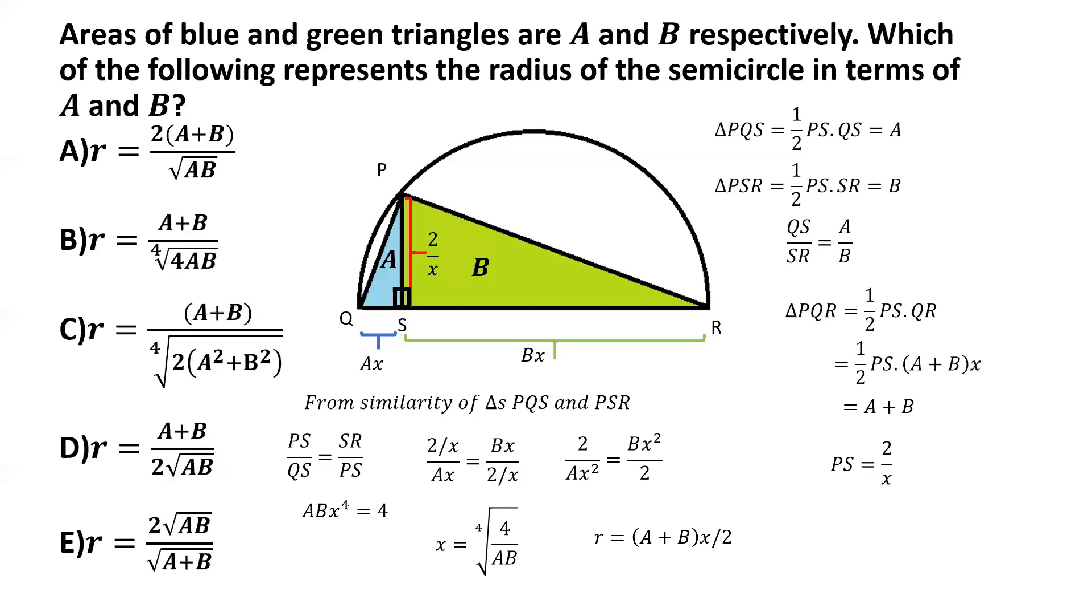And again, we can take A plus B common. So we have A plus B multiplied by X divided by 2. And now we just substitute the value of X in terms of A and B, which we already found.